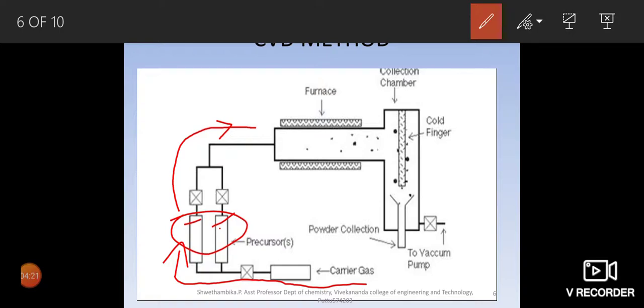This is one very salient feature of CVD method where we can prepare doped nanoparticles and coated nanoparticles because precursors we can take in a different way. Now, the carrier gas when comes here, here this particular area we have a furnace. This particular area we have a furnace and whatever the shaded part shown here says that this is the hot zone of the furnace that is maintained at very high temperature.